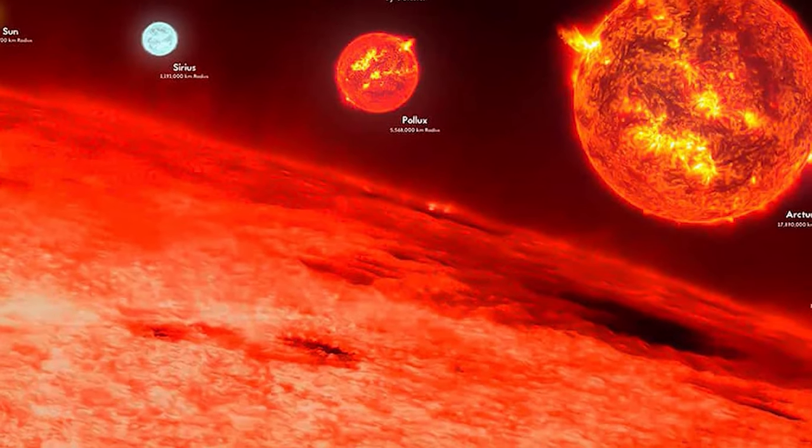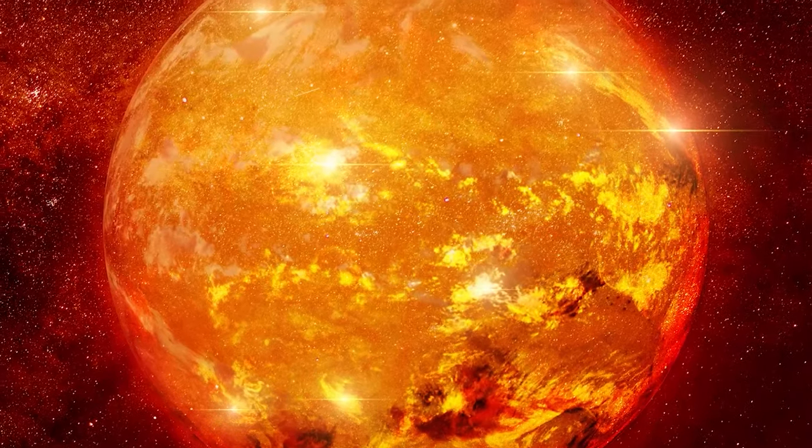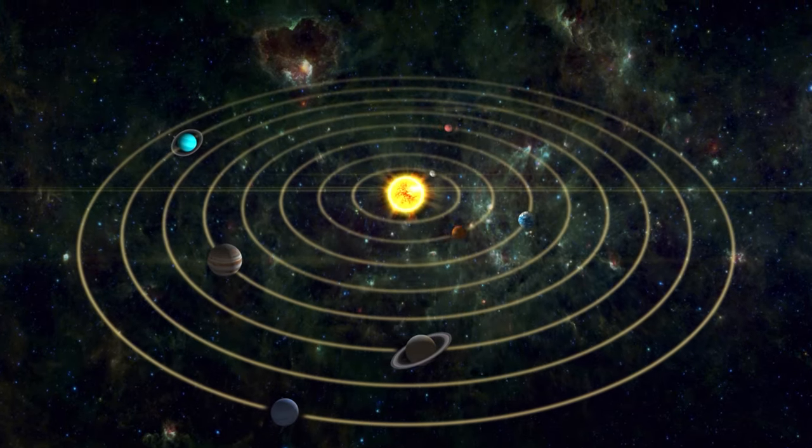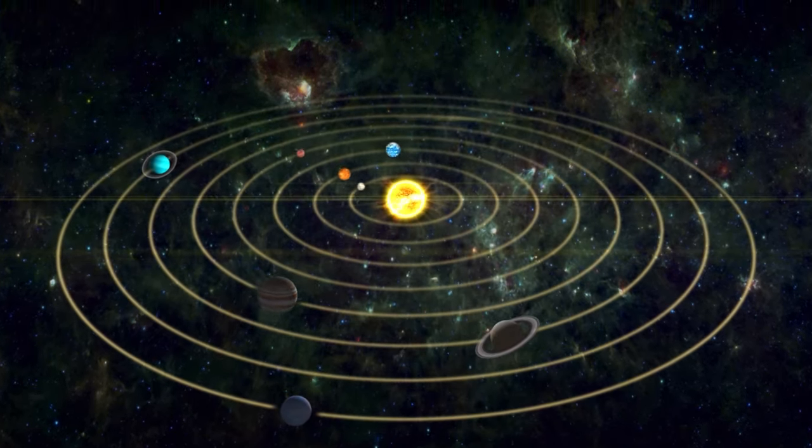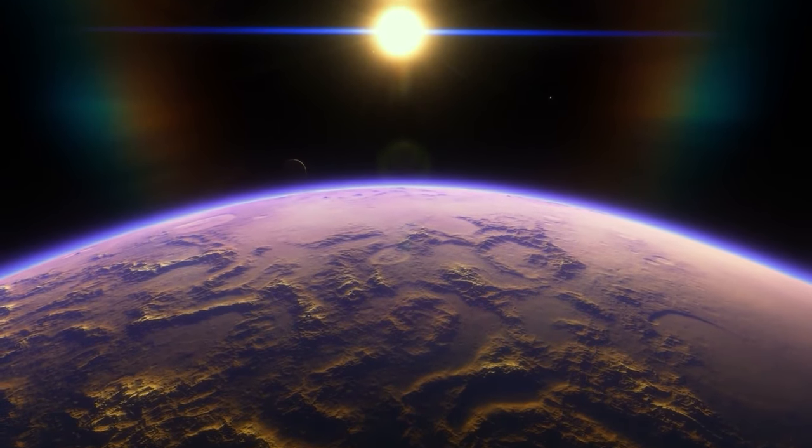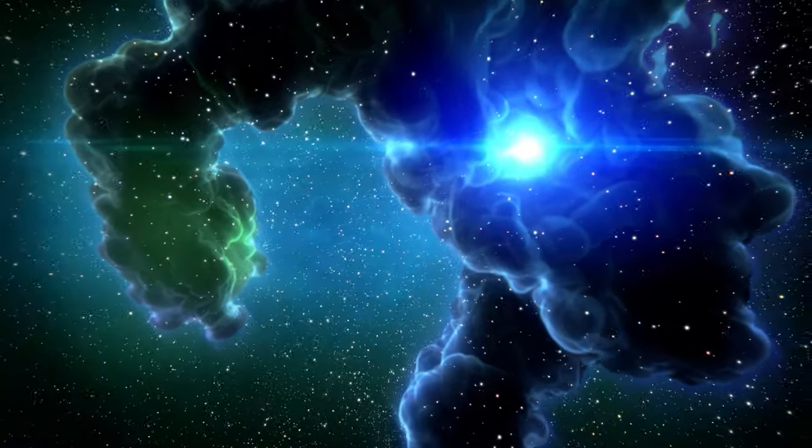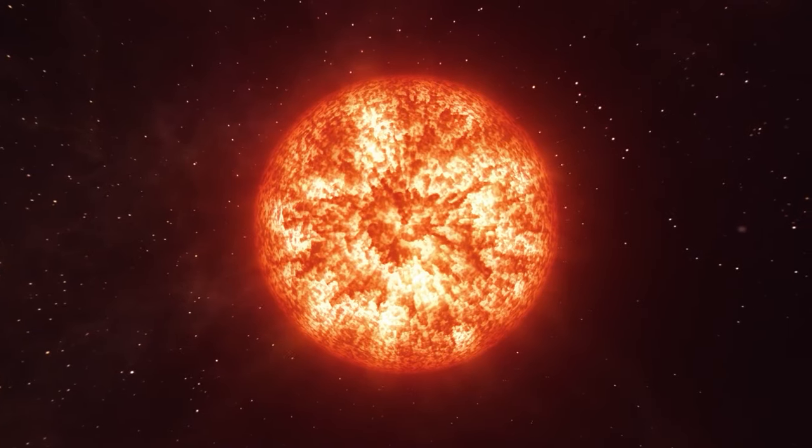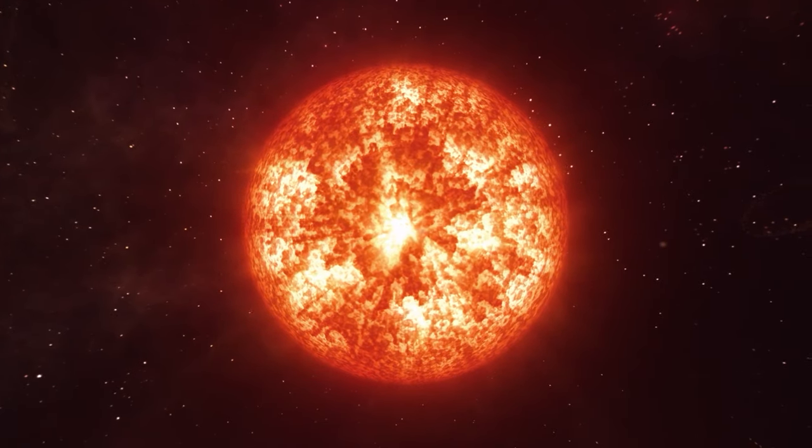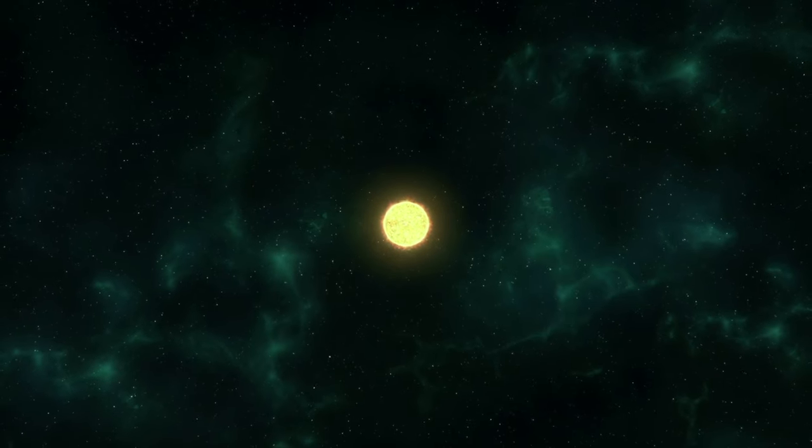Stars like UY Scuti, one of the largest known, extend for more than 1,700 times the sun's radius. If placed in the center of our solar system, it would engulf the orbits of planets up to and beyond Jupiter. The lives of these hypergiants are turbulent and short-lived, at least in astronomical terms. Born from massive clouds of gas and dust, these stars burn bright but burn out quickly. Their enormous sizes mean they have an abundance of fuel, but they consume it voraciously. Within a few million years, a mere blink in cosmic time, these stars exhaust their fuel and meet dramatic ends.